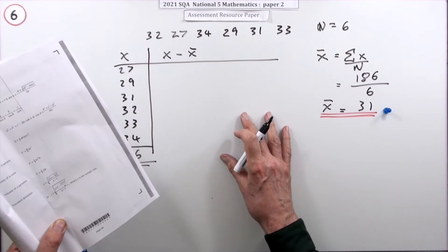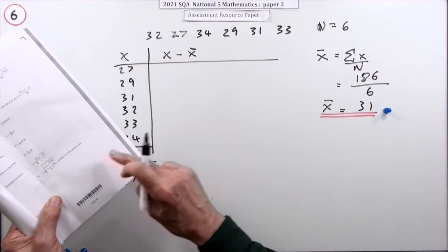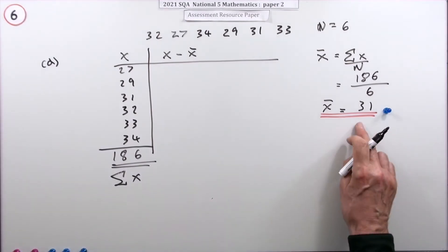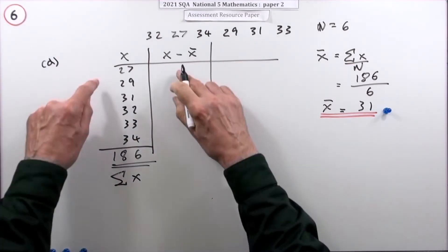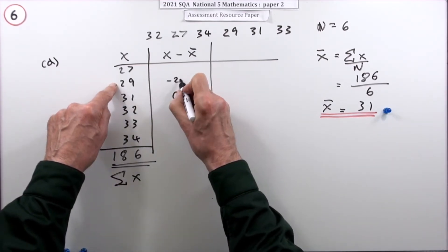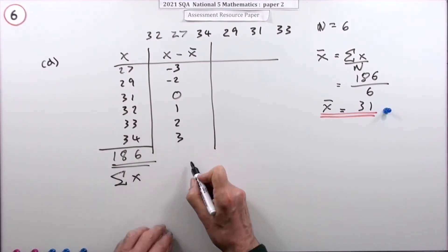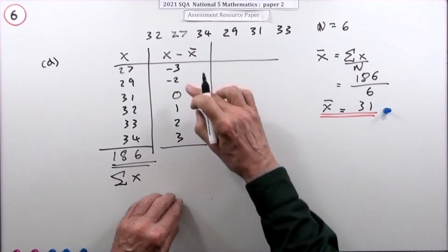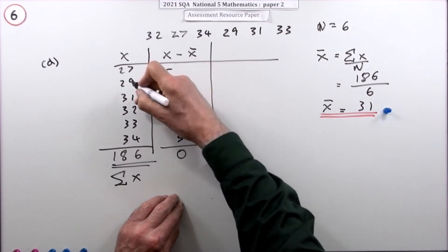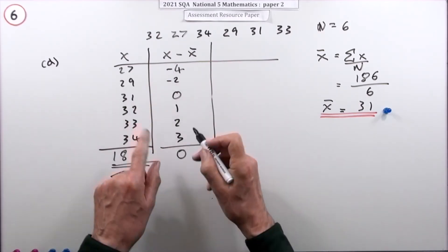If the mean were a horrible decimal, I'd use the other formula with x² instead, which only needs one extra column. But since 31 is a nice mean, we use x minus x̄. The deviations are: -4, -2, 0, 1, 2, 3 - and that's a handy check, because the deviations should always add up to zero.